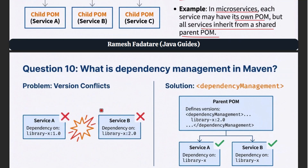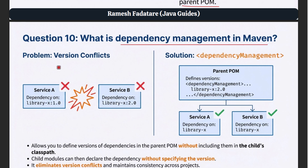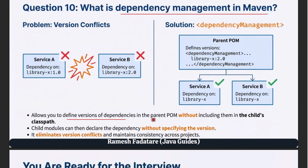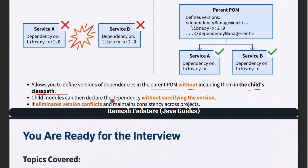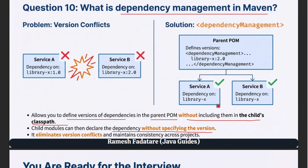Question 10: What is dependency management in Maven? Dependency management allows you to define versions of dependencies in the parent POM without including them in the child's classpath. Child modules can then declare the dependency without specifying the version. This ensures all modules use the same version of a library, which is crucial in large teams. Dependency management is one of Maven's most powerful features because it eliminates version conflicts and maintains consistency across projects.